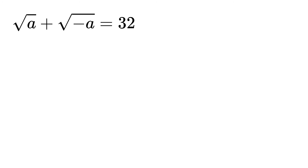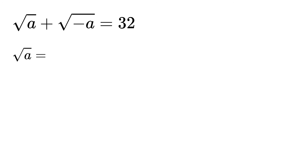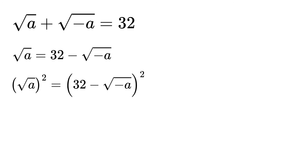As a first step, take the square root of minus a on the right-hand side to get the square root of a equals 32 minus the square root of minus a. Now, in order to eliminate the square roots and get an equation that we can actually solve, we will square both sides. On the left-hand side, squaring the square root of a simply gives a.